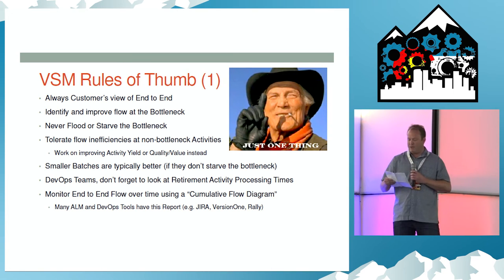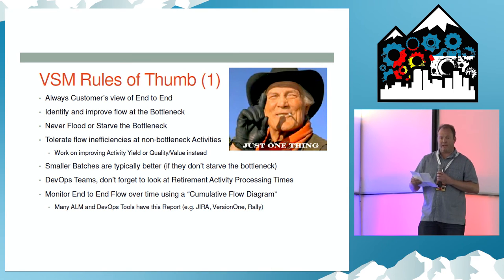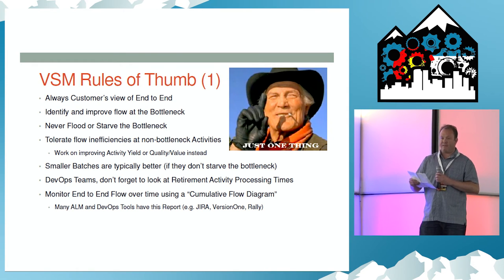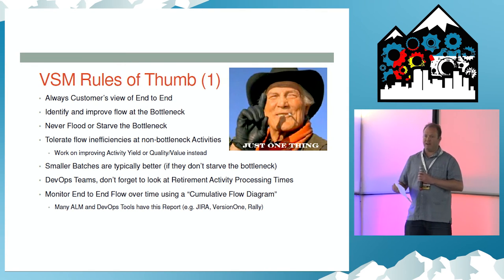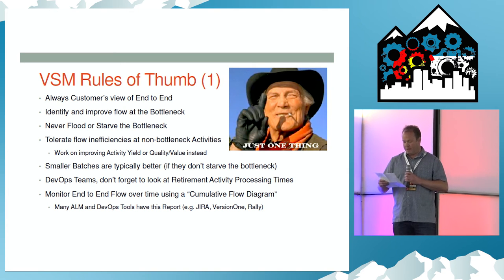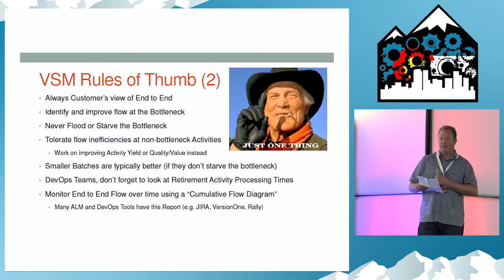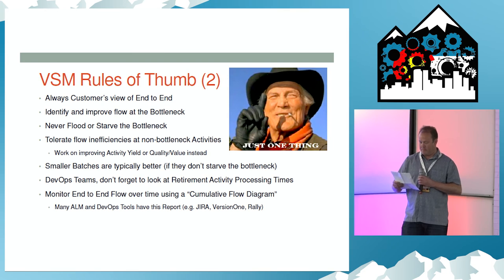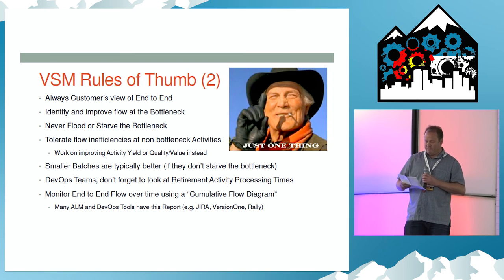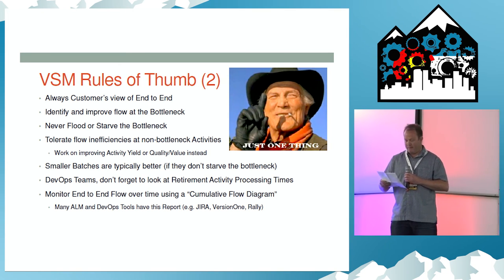To recap: it's always the customer's view of end-to-end. You should identify and improve flow at the bottleneck, never flood or starve the bottleneck, and tolerate any flow inefficiencies outside the bottleneck. Smaller batches are generally better if they don't starve the bottleneck. For DevOps teams, don't forget to look at your retirement cycle times because that's going to affect your next iteration. Finally, use a tool called a cumulative flow diagram to monitor your flow over time.